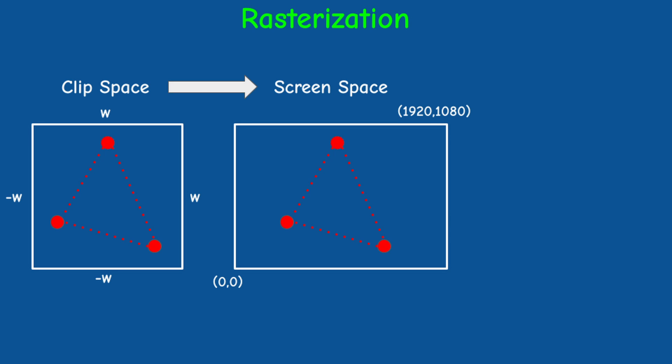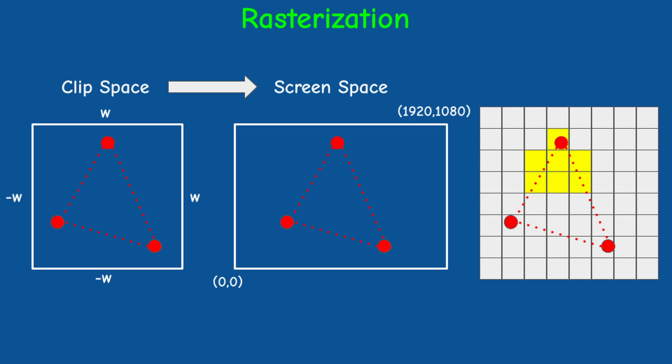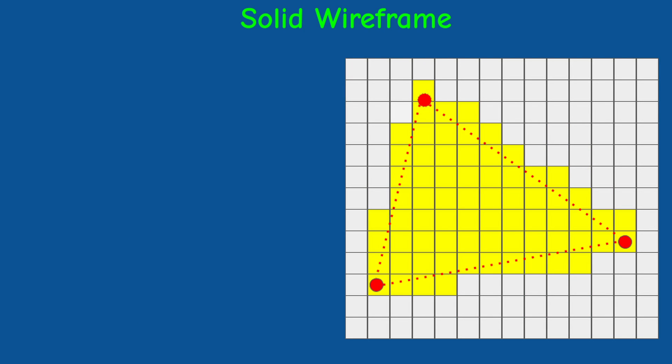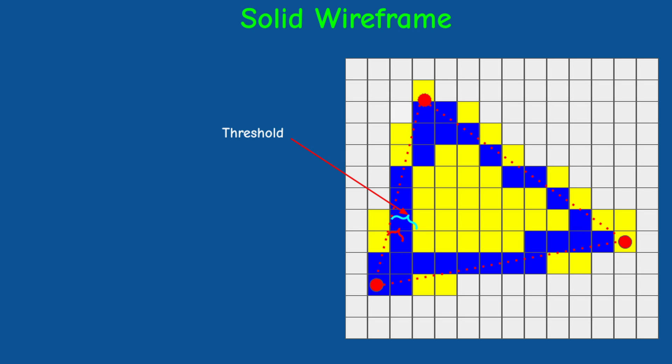The rasterizer receives three vertices in clip space, transforms them to screen space, and executes the fragment shader on each pixel inside the triangle including the edges. The idea behind this technique is to find the distance in pixels from the current fragment to the closest edge of the triangle, and if that distance is below some threshold, change the color of the fragment. We can also apply interpolation to smoothly transform from the original fragment color to the requested edge color.